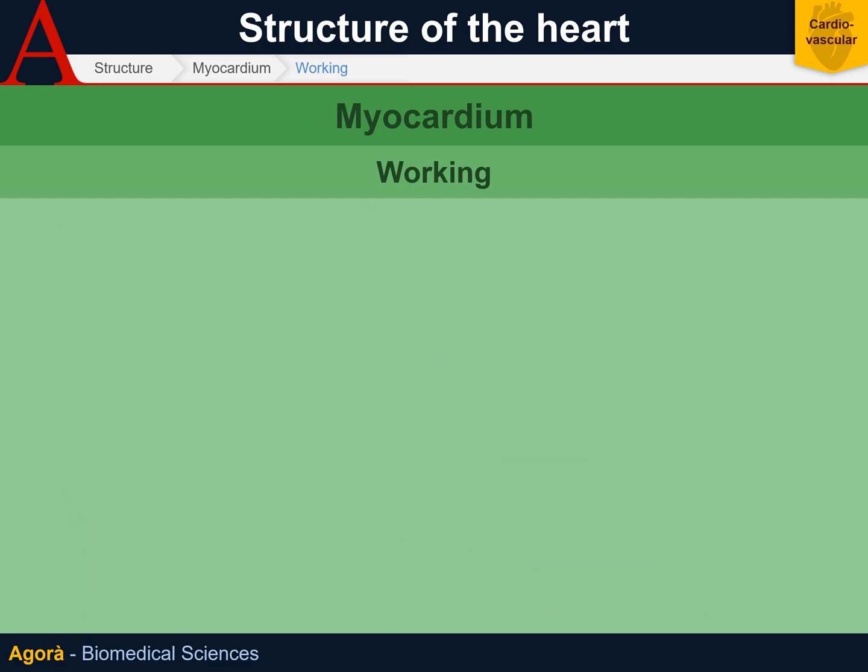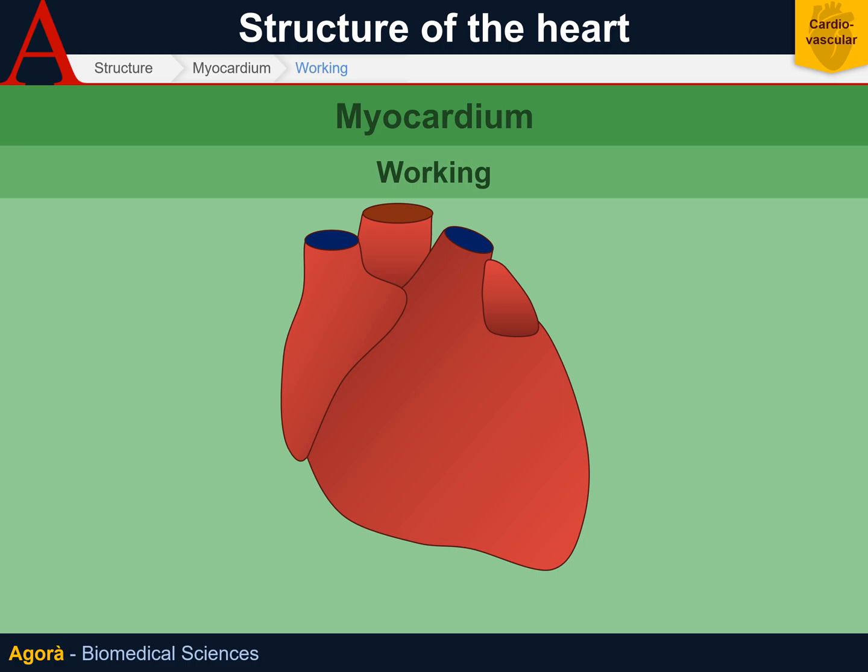Another interesting feature of the common myocardium is that some areas have special functions. Among the most studied are the auricles — anatomically identified as projections of the atria — whose myocardiocytes are not only contractile but also secretory cells. They release the natriuretic peptide, a substance that favors sodium excretion, thus increasing urine volume.